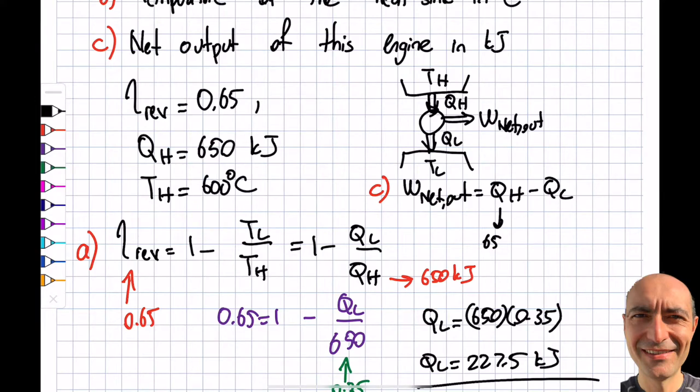QH was given as 650 kilojoules, and QL was 227.5 kilojoules from part A. The difference gives my answer for part C: W_net_out = 422.5 kilojoules.